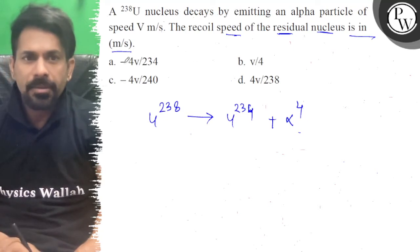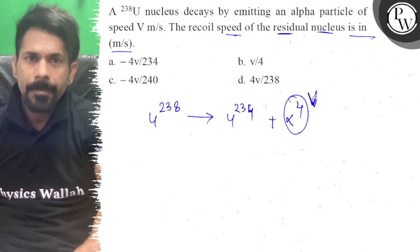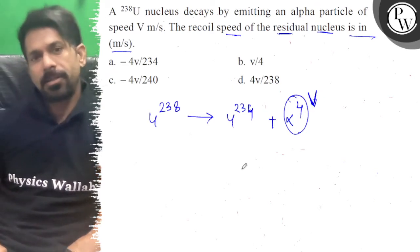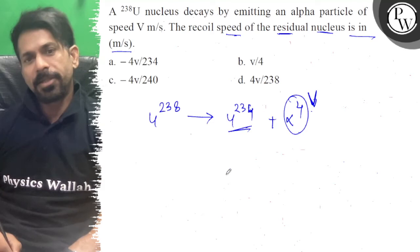We need to find the recoil speed of the nucleus, and the alpha particle's speed is v. If it came out with speed v, then what will be its speed?